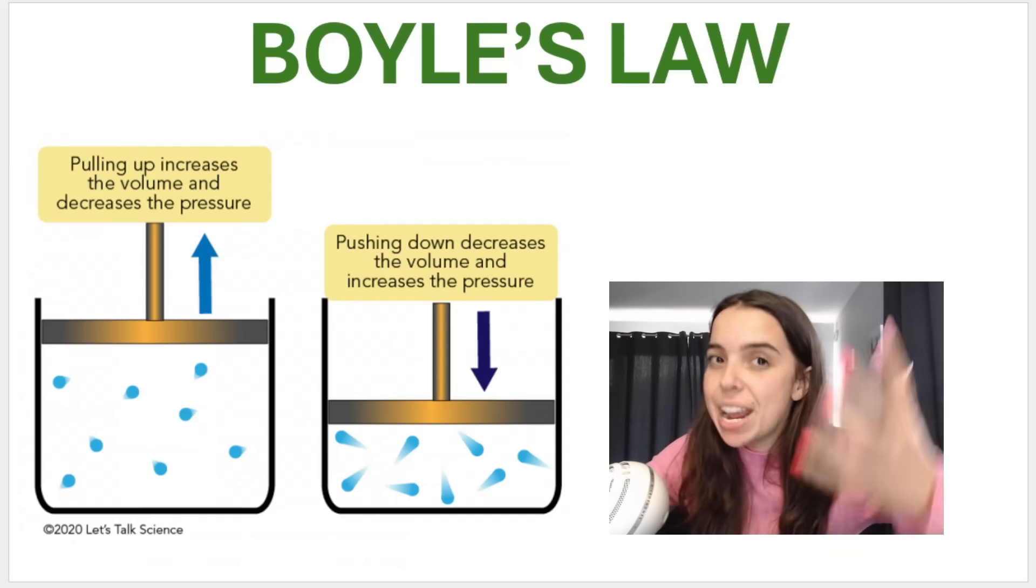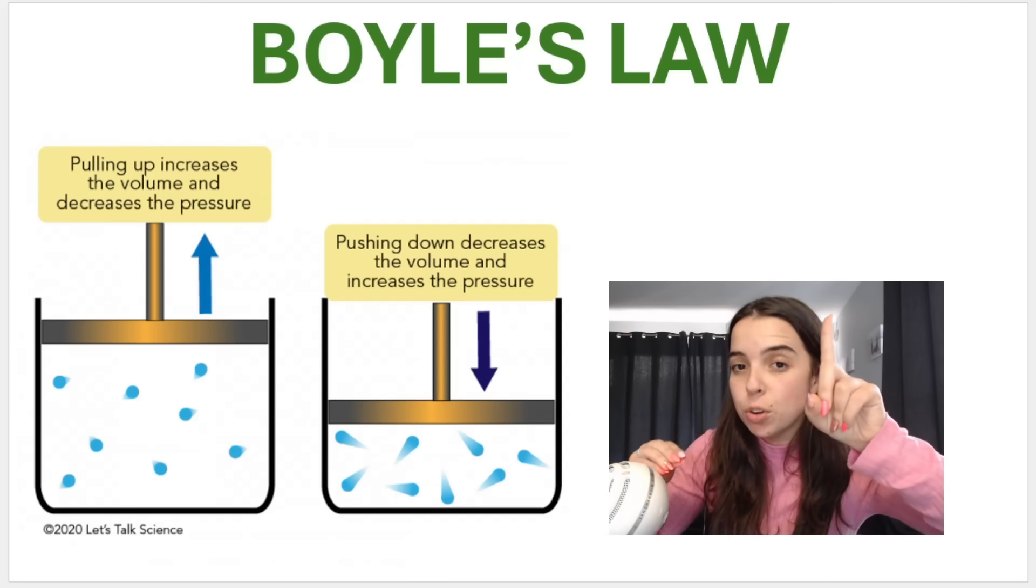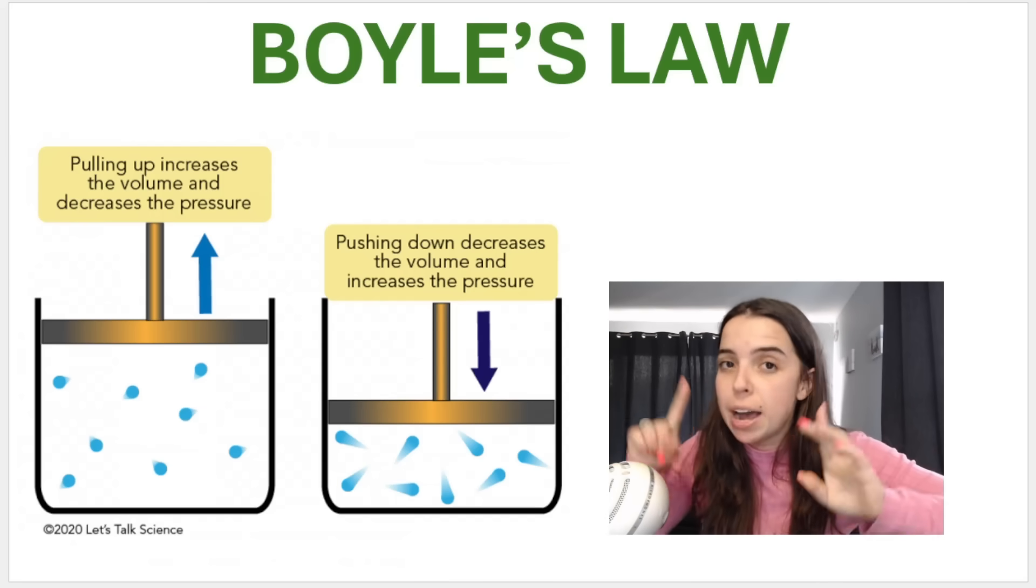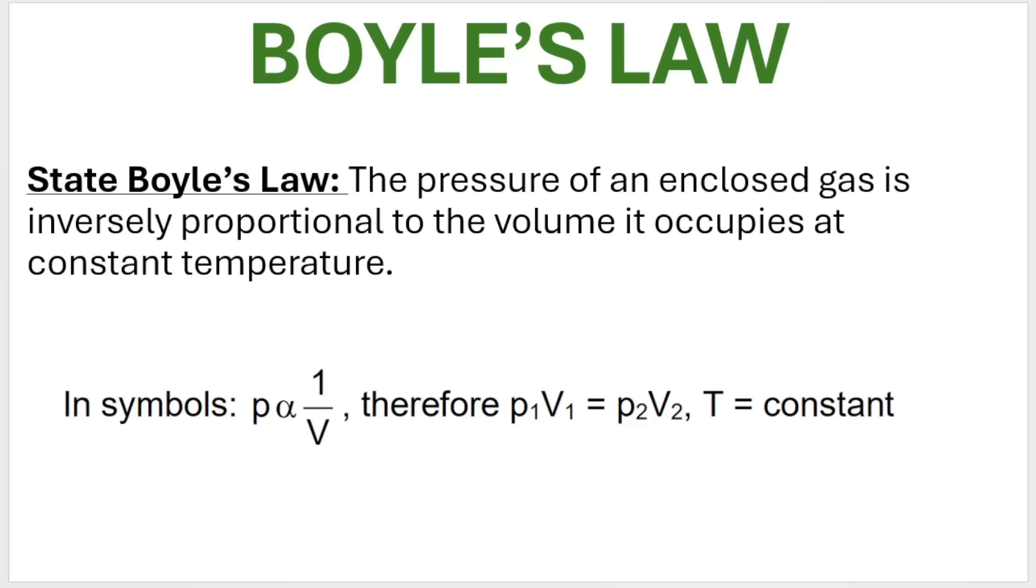So what type of relationship is this? If one variable goes up and the other variable goes down by the same proportion, it is indeed known as an inversely proportional relationship. Boyle's law says that the pressure of an enclosed gas is inversely proportional to the volume it occupies at constant temperature.